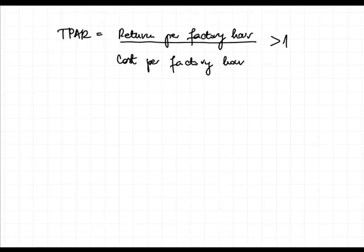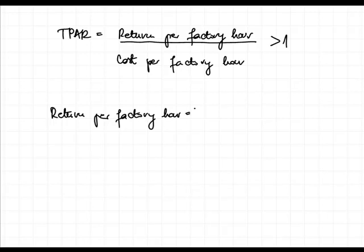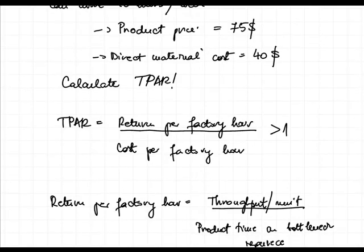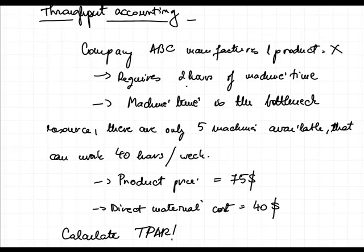Let's proceed to our calculations. First we calculate the return per factory hour. The return per factory hour is equal to the throughput per unit divided by the product's time on the bottleneck resource. In our case the bottleneck resource is the machine, and the product time on the bottleneck resource for one unit is two hours.